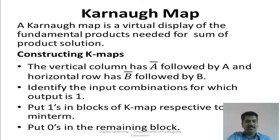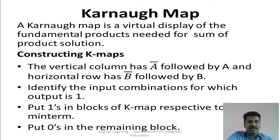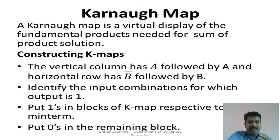There is a different method to solve these kinds of truth tables, and that is the Karnaugh map method. Before going to problems, we should understand what a Karnaugh map is. A Karnaugh map is a visual display of fundamental products — these fundamental products are needed for the SOP solution. To write in canonical SOP form, we need to find out the fundamental products. These fundamental products, or min terms, are displayed visually by the Karnaugh map. The K-map is simply a visual display of fundamental products needed for the SOP equation.